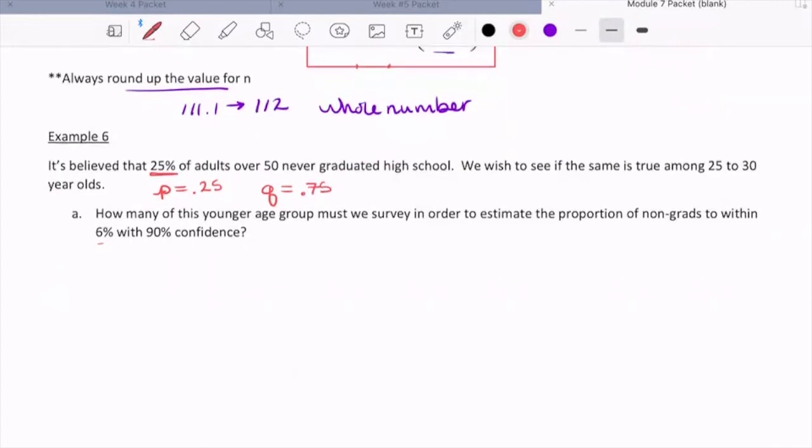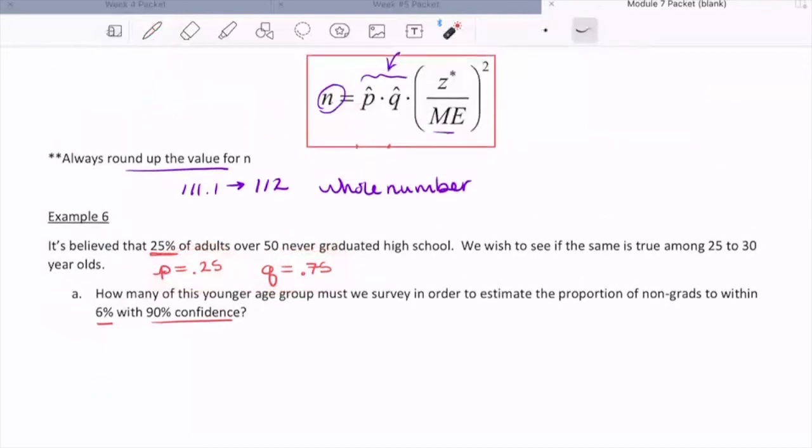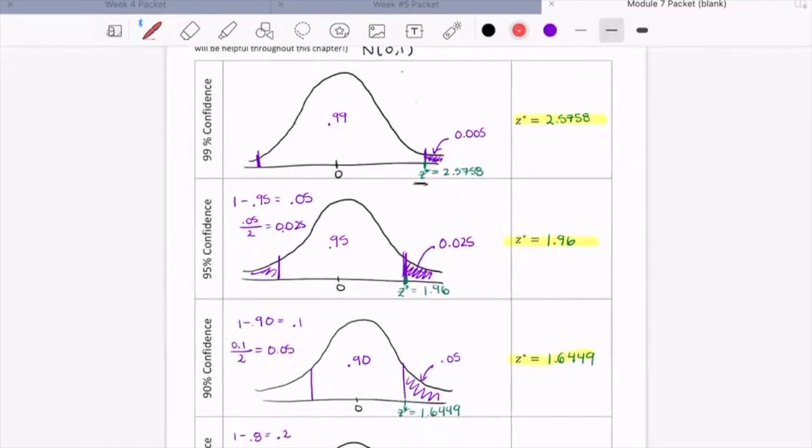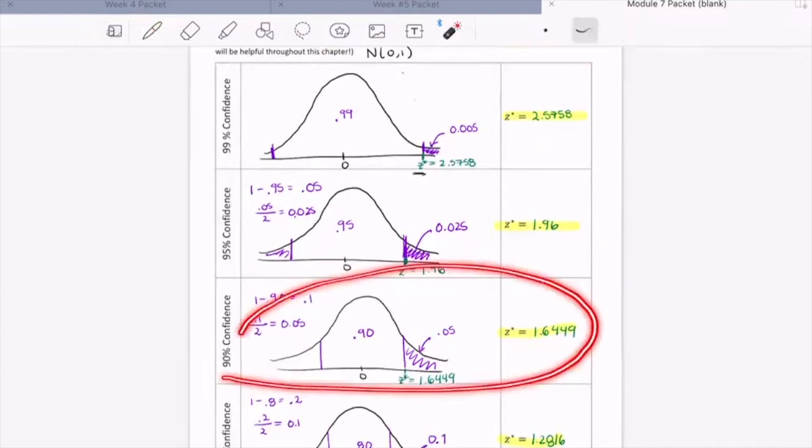Part a says, how many of this younger age group must we survey in order to estimate the proportion of non-grads to within 6% with 90% confidence? So before we dive in, let's unpack all the information we're given. We see here that we're already told what p and q are assumed to be. So we're going to use these p and q values in our formula. What else are we given? Well, we want to estimate this proportion within 6%. So this 6% is going to be that margin of error. So 6% as a decimal would be 0.06. And then we're told 90% confidence. So this is going to tell us our Z star value. What is that Z star value? Well, we just flip back a couple pages to our work finding those critical Z scores. 90% confidence level tells us our Z score is 1.6449.